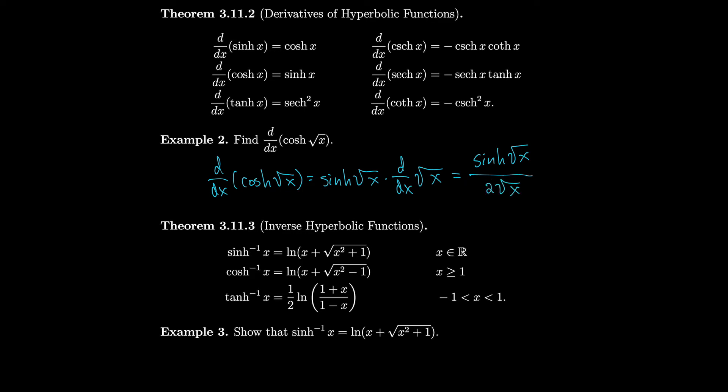We can also define inverse hyperbolic functions, and those inverse hyperbolic functions are equal to certain natural logarithmic functions. It makes sense that since we defined all our hyperbolic functions in terms of e, our inverse functions would be defined in terms of ln, because that's the inverse of e. Let's just prove one of them.